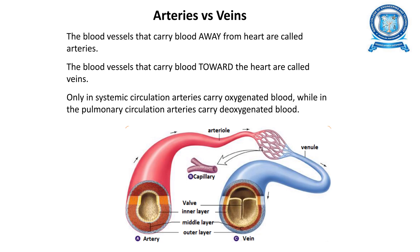Arteries versus veins: blood vessels that carry blood away from the heart are called arteries, and those that carry blood towards the heart are called veins. Here is the basic diagram of arteries and veins.